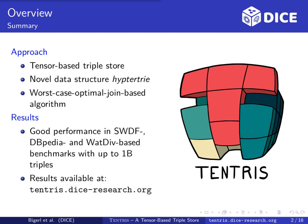Our evaluation shows that Tentris performs well in three benchmarks based on Semantic Web Dogfood, DBpedia and WatDiv datasets with up to one billion triples. You can find all our code, benchmarks and results at tentris.dice-research.org.